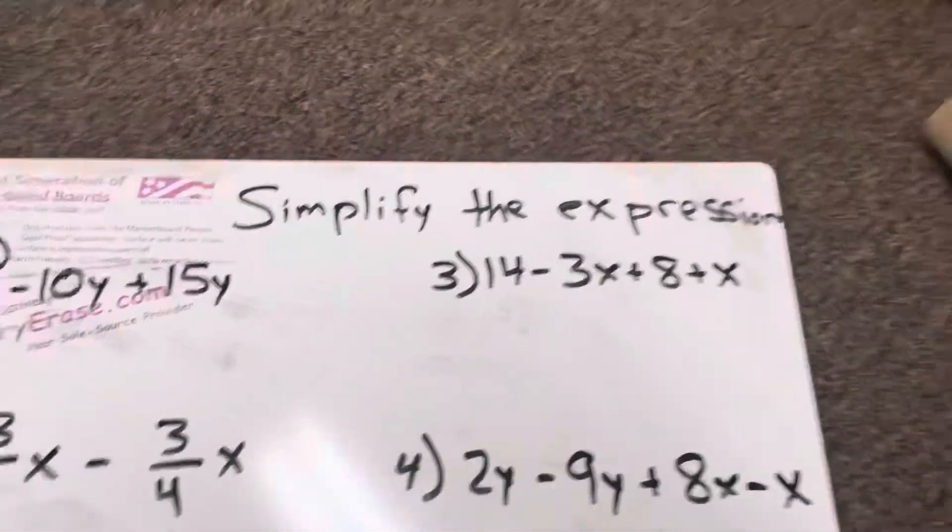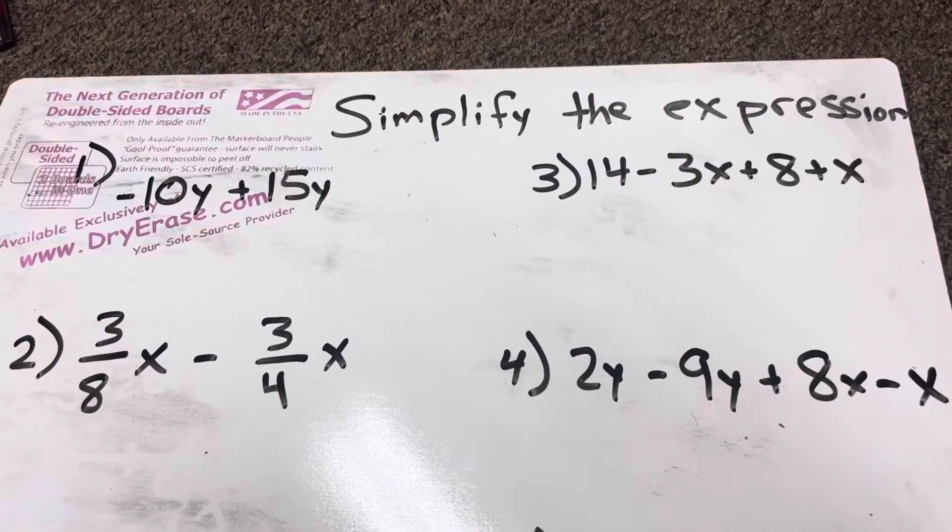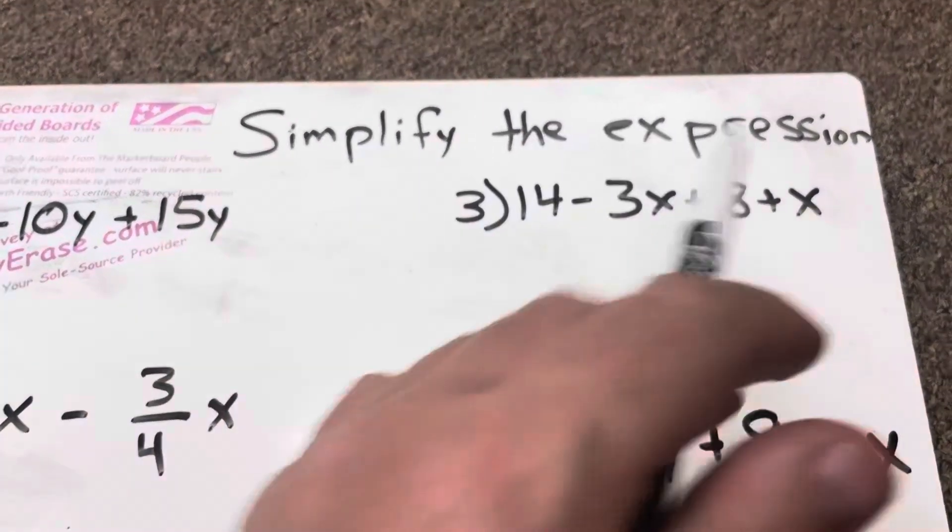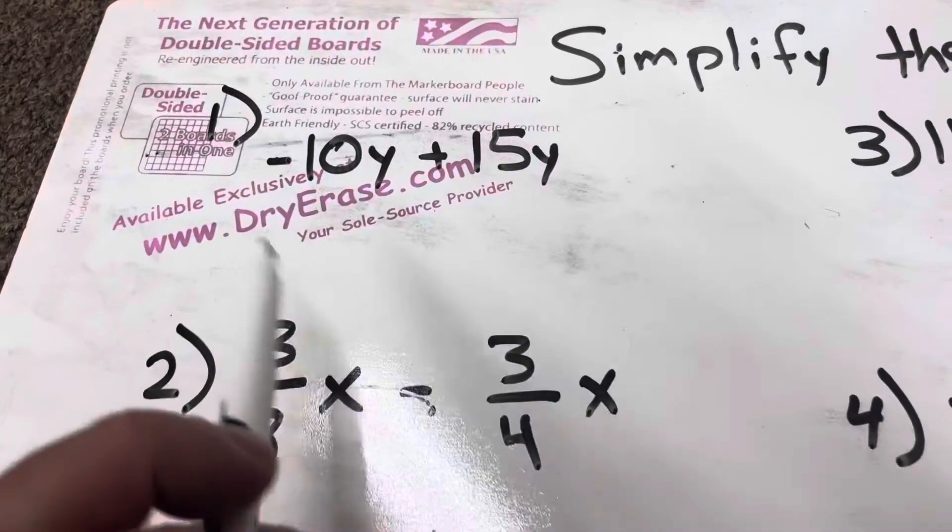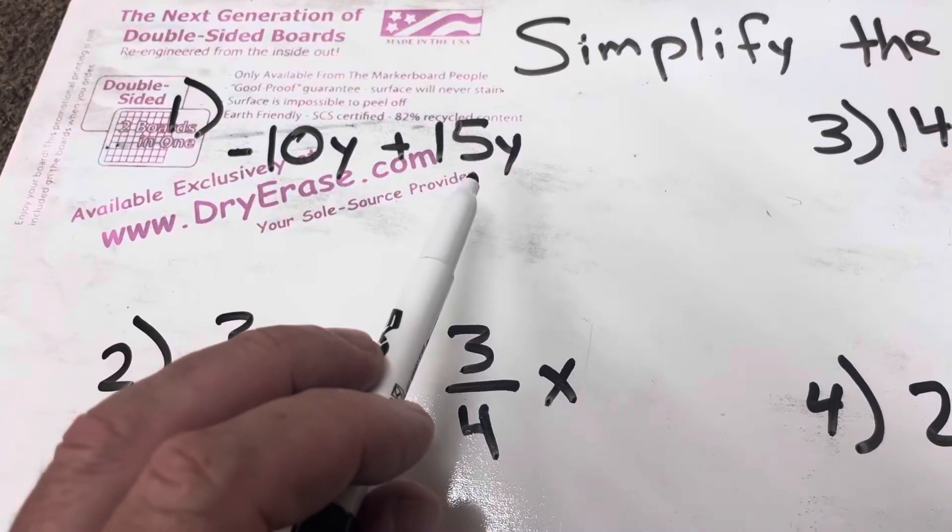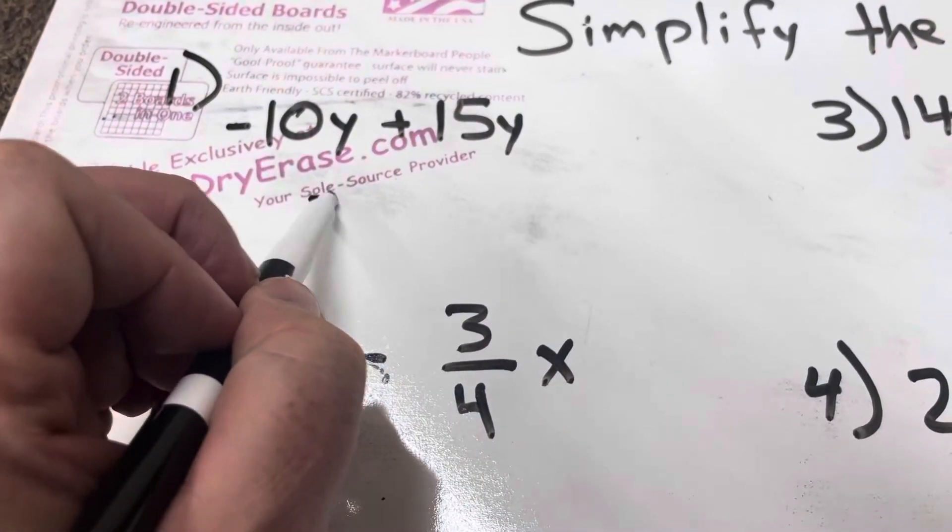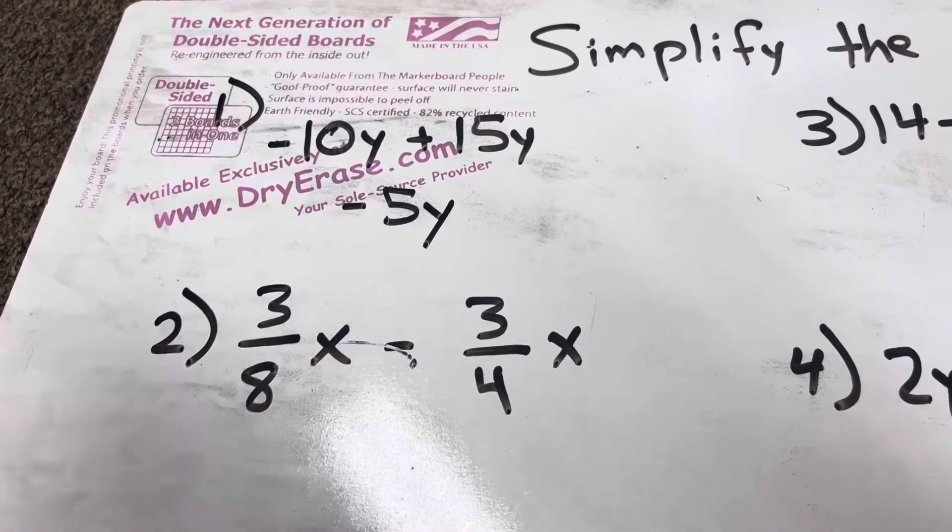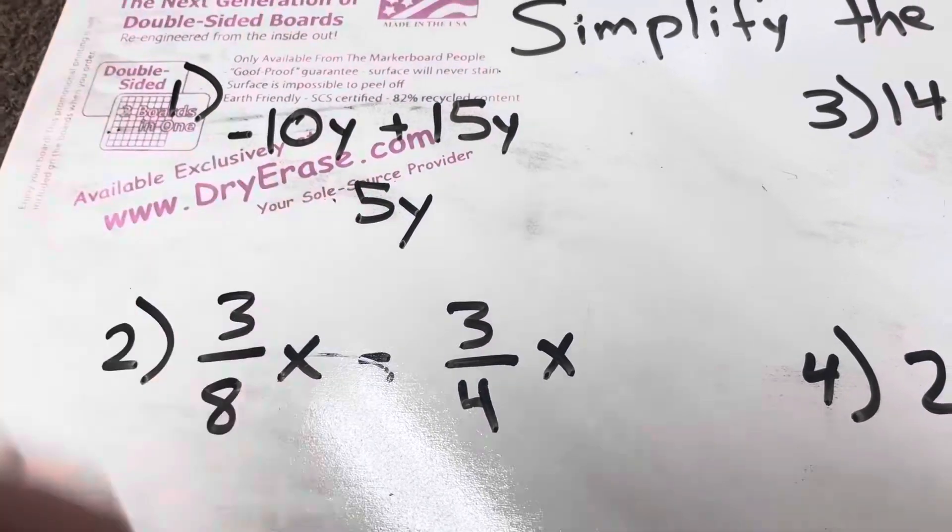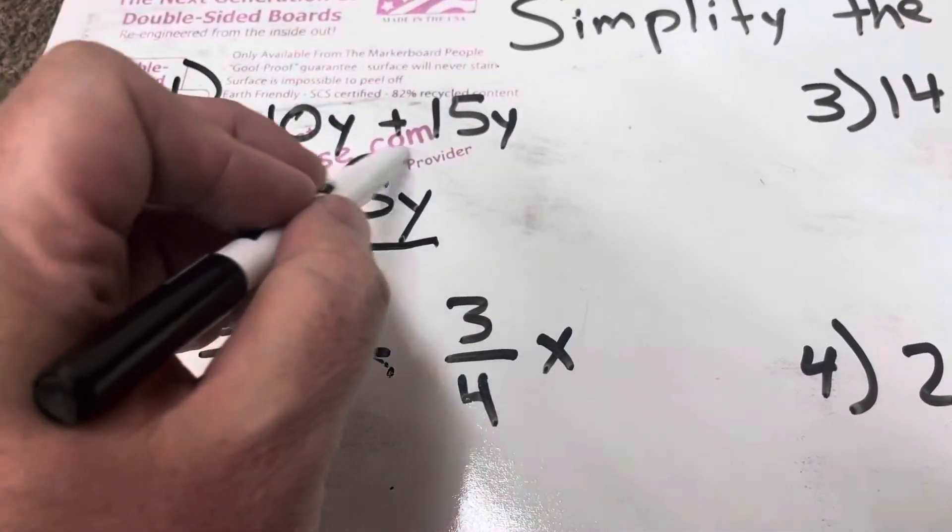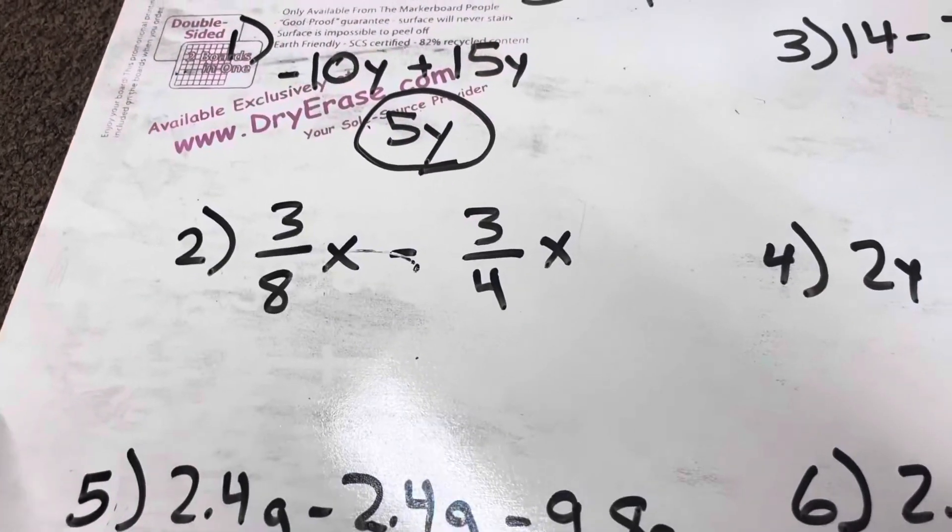Let's talk about the second part that tells us to simplify the expression. We're not really solving it because we don't know what a variable equals. This is kind of the first step of that. Simplify the expression. Negative 10y plus 15y. Negative 10 plus 15. Actually, sorry. Positive 5y. I made a mistake. Negative 10 plus 15 is going to be a positive 5y. That's my simplified expression. It's combining like terms.